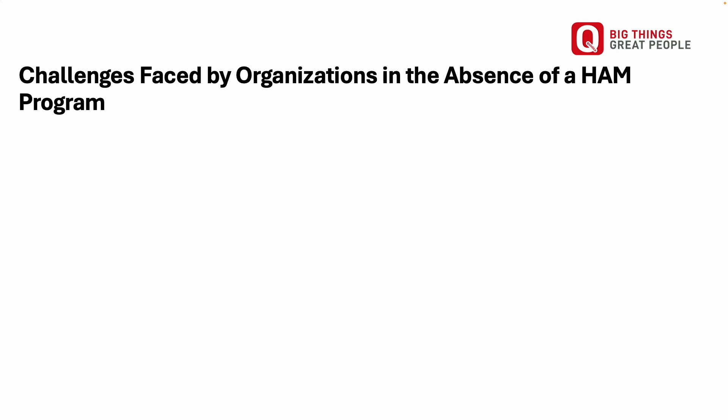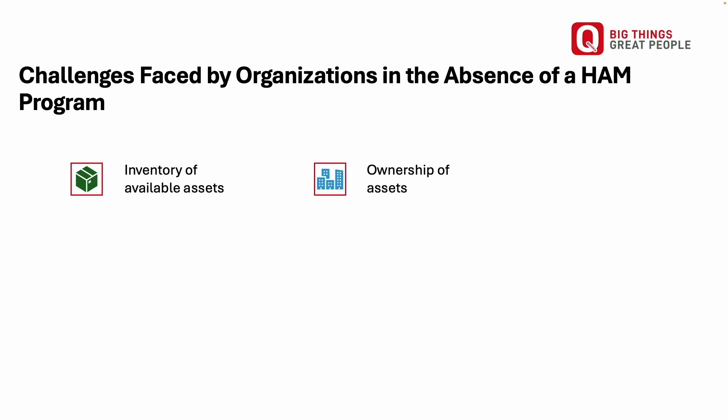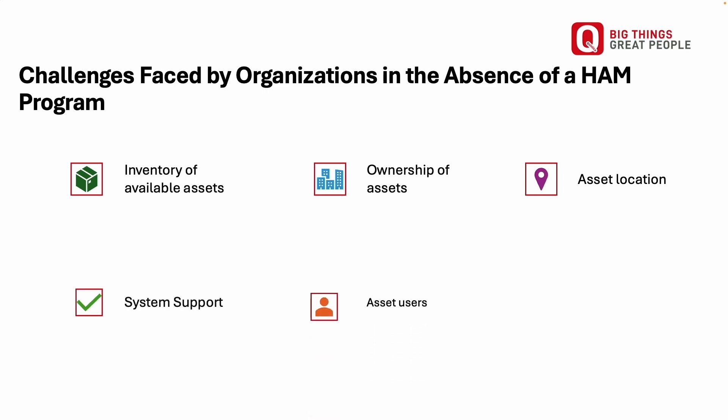In the absence of a HAM program, organizations face several challenges. Without accurate records, inventory management becomes impossible — you can't know what assets are available in stock. Identifying which assets belong to the organization versus employees becomes difficult. Tracking asset location is nearly impossible, which can disrupt business operations. It is also hard to determine which systems or business services are supported by which assets, and not knowing who is using specific assets creates security risks and accountability issues.